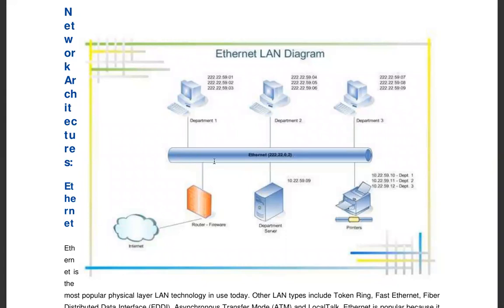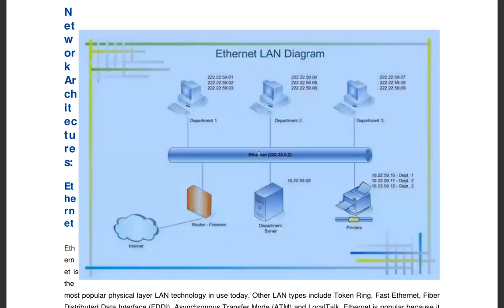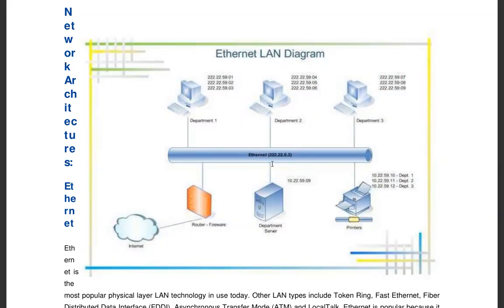The hacker can penetrate the main line and divert whatever resource is being shared. For example, if computer one is sending an amount of one million Ghana cedis, the hacker taps the channel, stops the transmission, gets it, and passes it to themselves. The hacker knows the IP address of the whole Ethernet main line — 222.22.0.2 — and has tapped it, so whatever passes through the channel from any department gets intercepted.